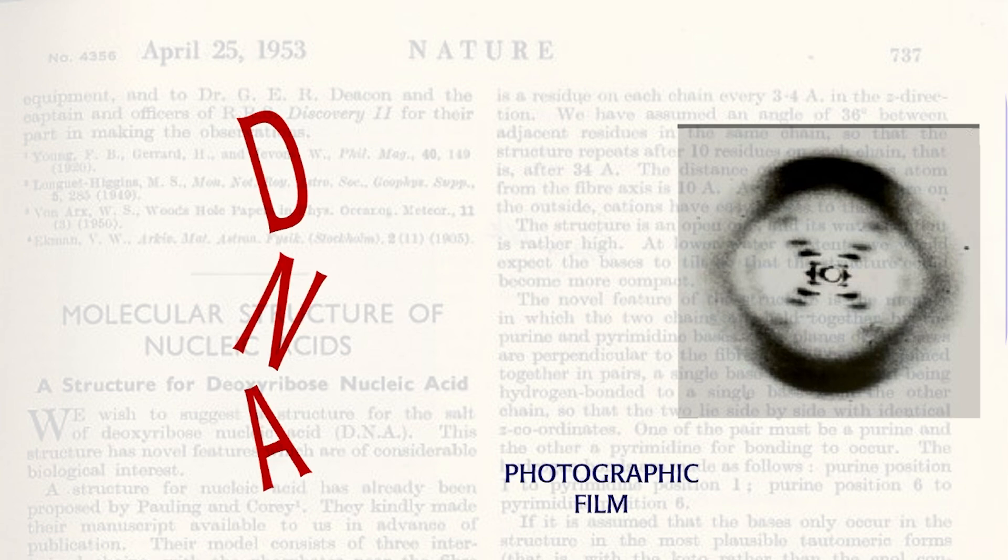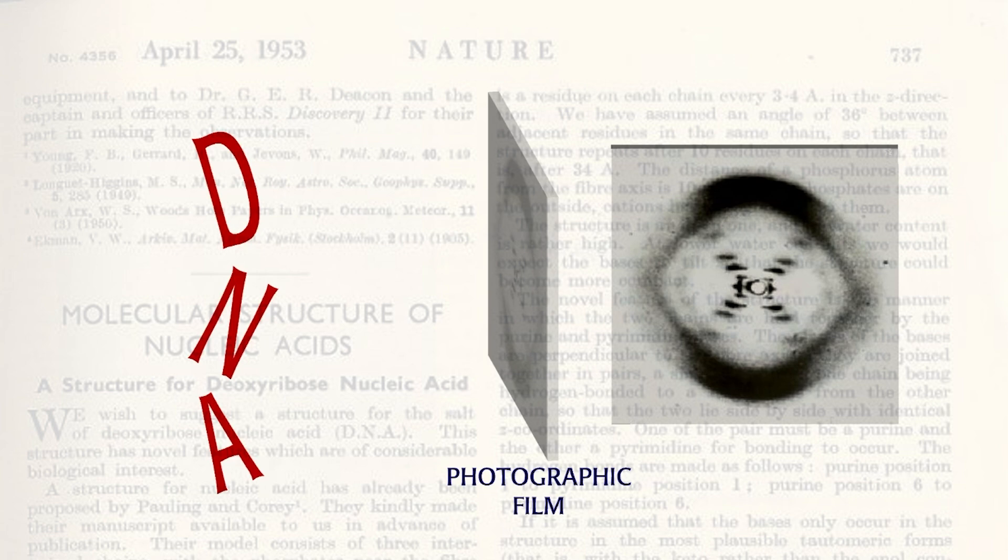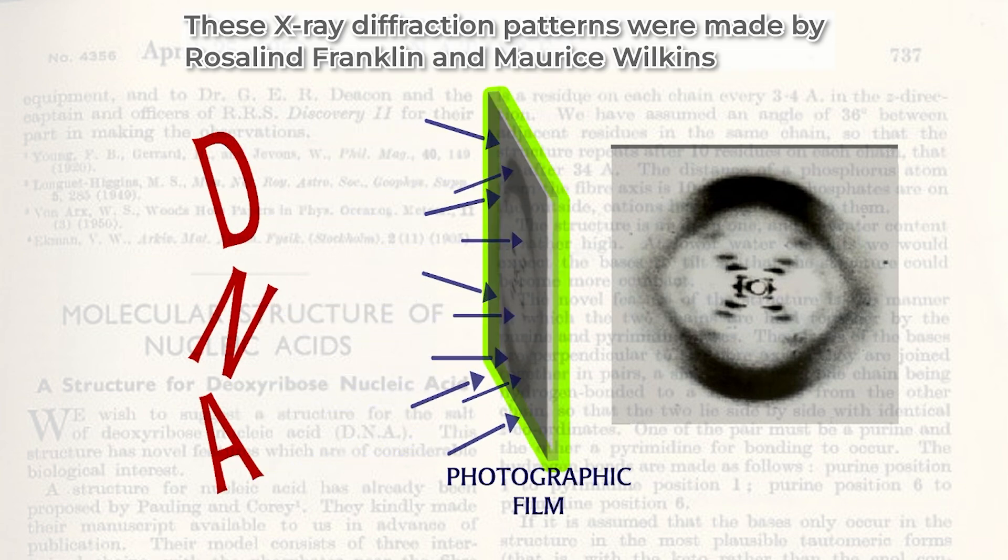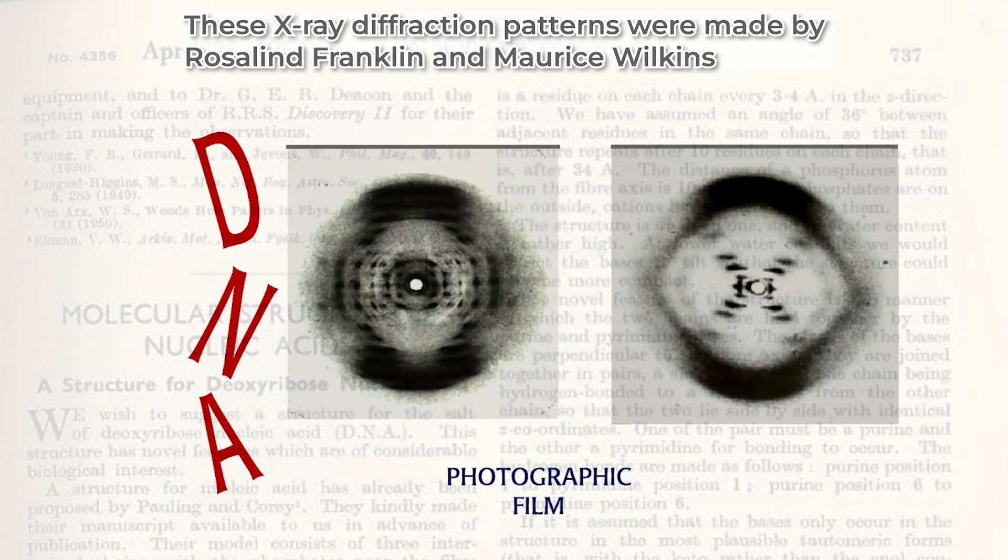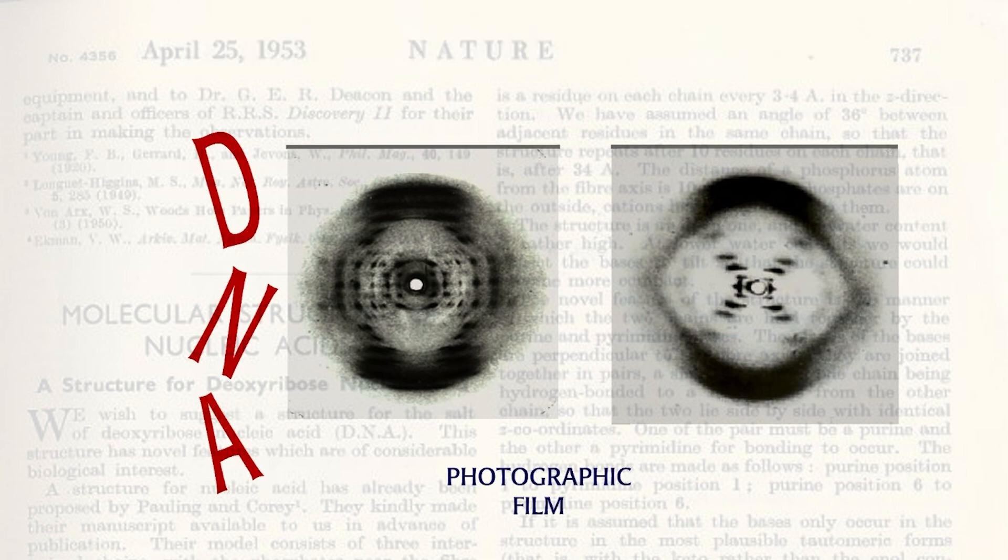The resulting diffraction pattern is a unique signature of the molecule. They got two different types of DNA fibers. These fibers gave two distinct diffraction patterns. These X-ray diffraction patterns were made by Rosalind Franklin and Maurice Wilkins. They observed more spots and more information on X-ray data, and were able to calculate the basic dimensions of the DNA molecule.